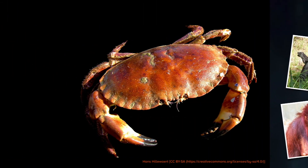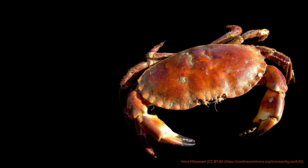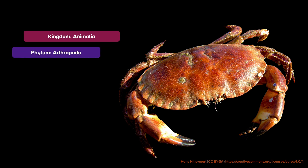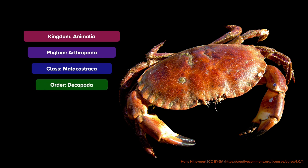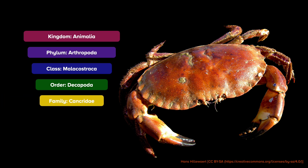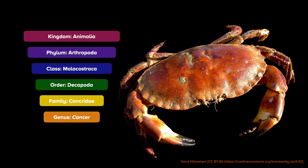Let's look at this crab as an example of an animal without a backbone. Its kingdom would still be Animalia. The phylum would now be Arthropoda. The class would be Malacostraca. The order, Decapoda. The family, Cancridae. The genus, Cancer, and the species, Pagurus.